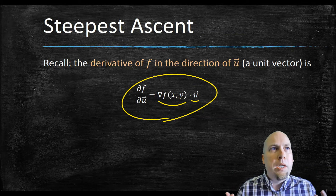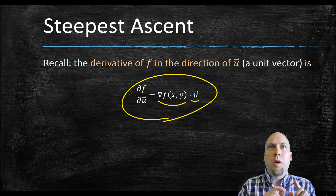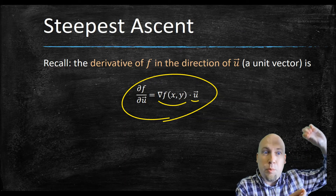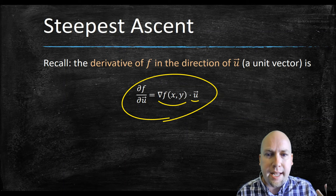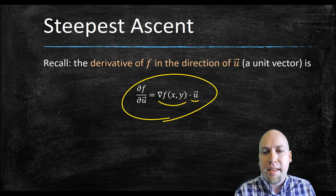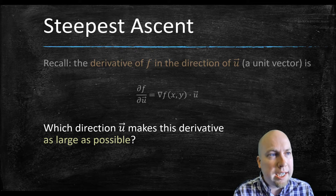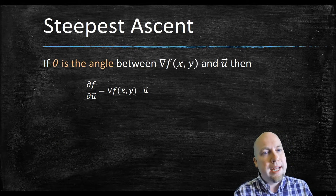What if we want to know what is the steepest direction? In other words, we want to walk up as quickly as we can. How do we find what direction does that? That direction is called the direction of steepest ascent, and that's what we're going to look at today — how do you walk up as quickly as possible at a particular point?